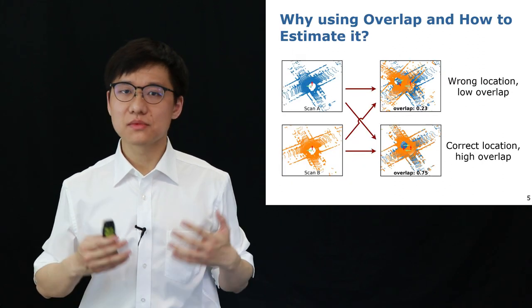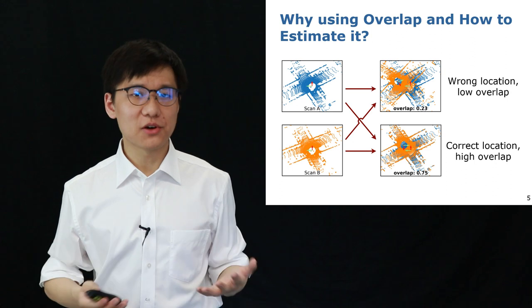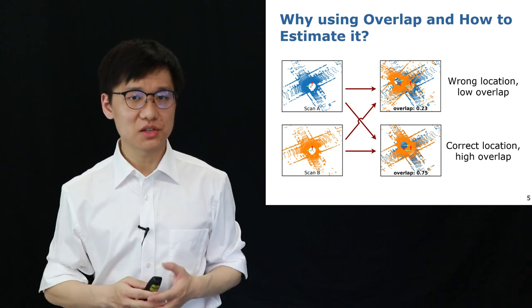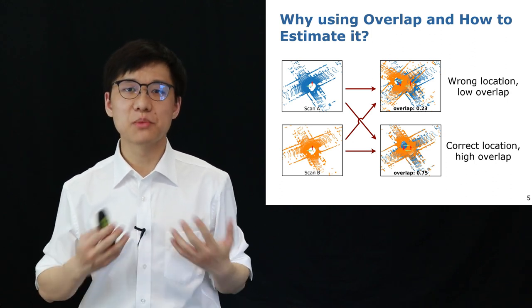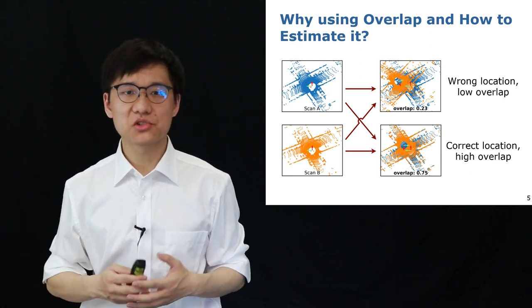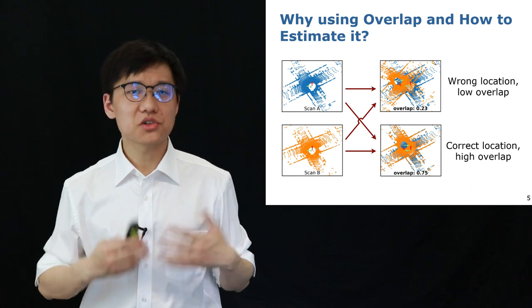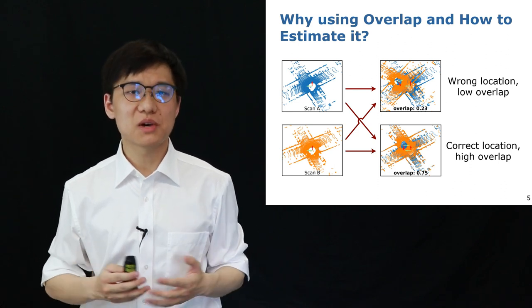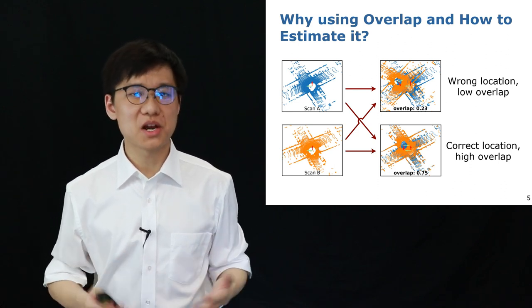The overlap between two LiDAR scans can be defined as the ratio of points that can be seen from both LiDAR scans. The reason why we use overlap to find the loop closure candidates is that larger overlap values often correspond to better alignment between pairs of LiDAR scans.